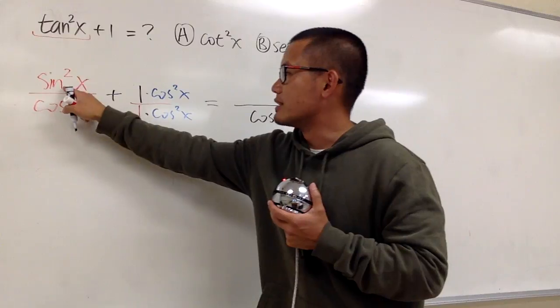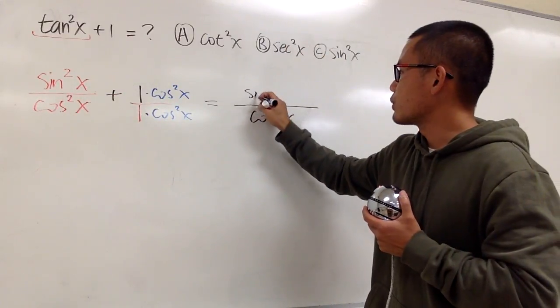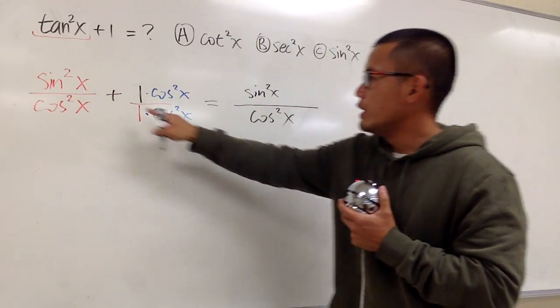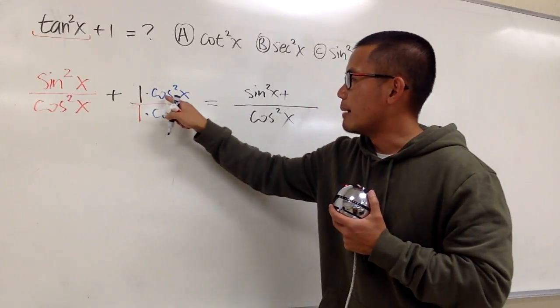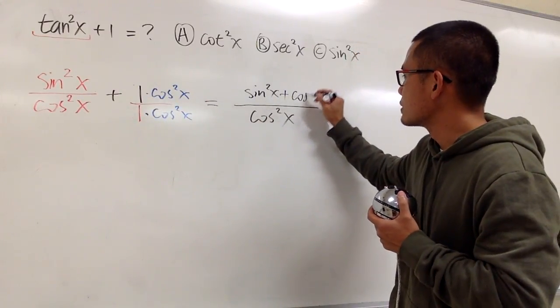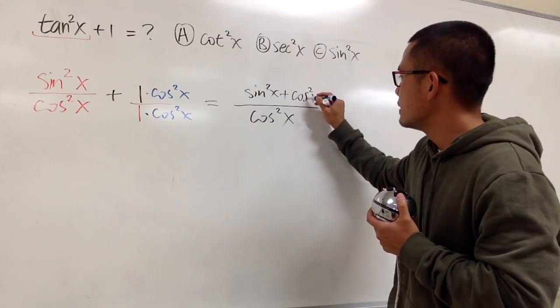And then on the top, we have the sin²x. Let me just put this down right here. And then we are going to add it with 1 times cos²x. It's just cos²x, like this.